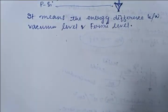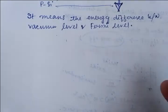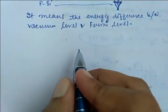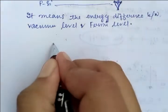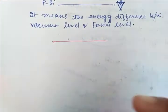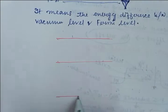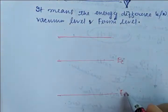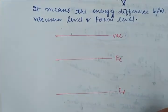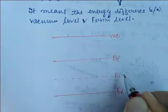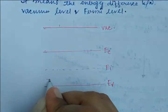How can we define work function in terms of an energy band diagram? The energy band diagram is the easiest way to represent and understand everything. I am drawing this picture: this is your vacuum level, this is EC, this is EV, and in the middle there is EI. Because of the p-type semiconductor, EF is positioned accordingly.